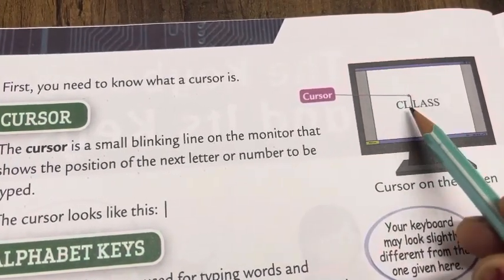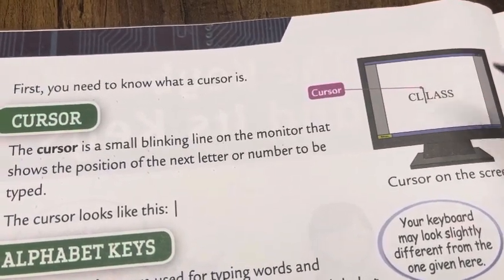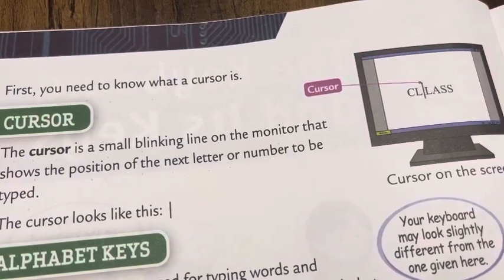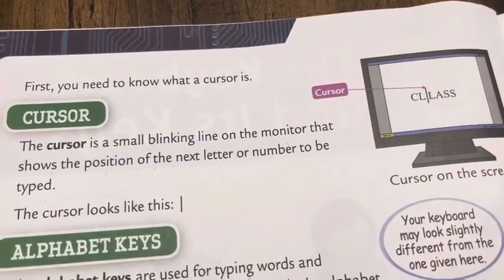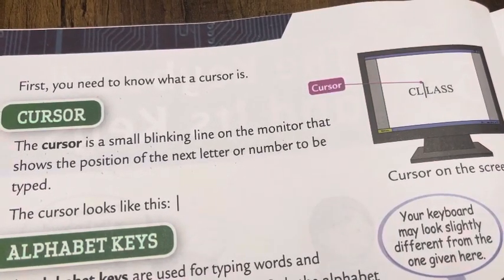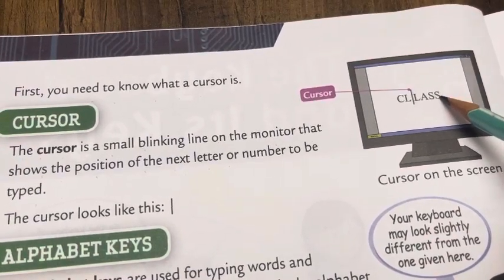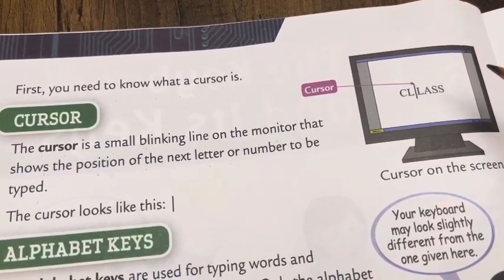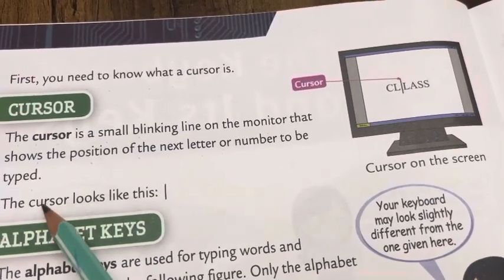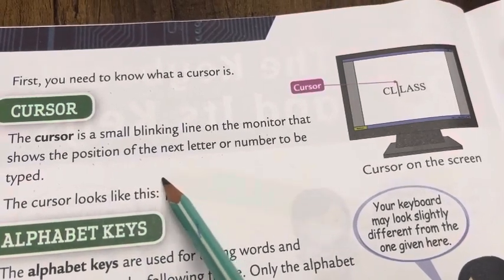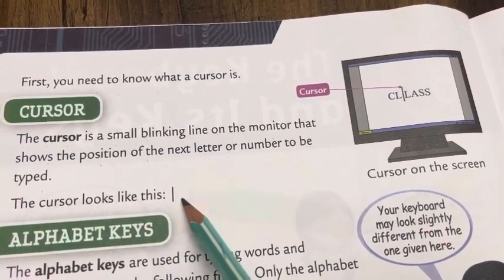The cursor is a small blinking line that keeps blinking on the screen of the monitor. It shows the position of the next letter we are going to type — it could be a number also. This is how a cursor looks.